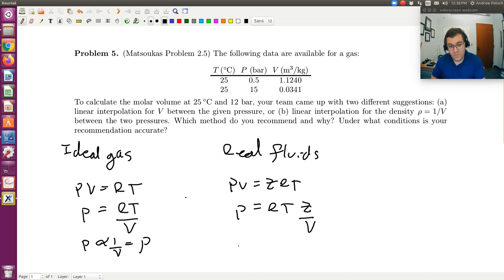So, again, even for real fluids, P is going to be RT Z over V, where RT is constant. So long as Z doesn't change much with P, then it's going to be fairly good. And that's it.